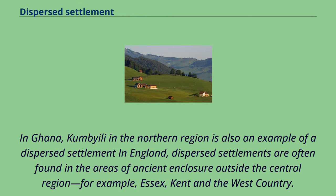In Ghana, Kumbayeli in the northern region is also an example of a dispersed settlement. In England, dispersed settlements are often found in the areas of ancient enclosure outside the central region, for example Essex, Kent and the West Country.